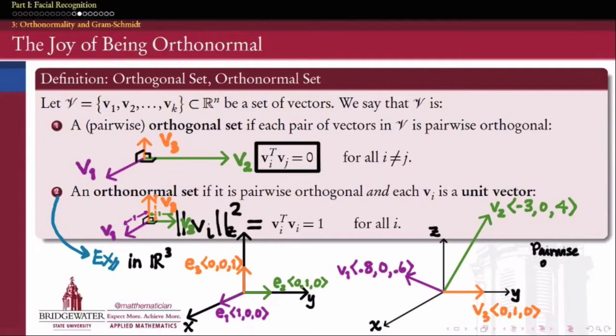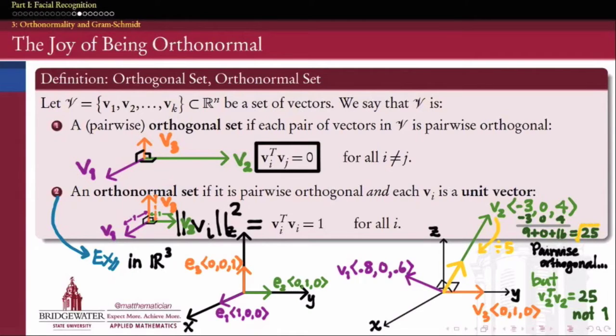We can check that this is a pairwise orthogonal set. In other words, if we take any of these vectors and dot product it with any of the other vectors, we're going to get 0. So this is a mutually perpendicular set of vectors. But it's not orthonormal. The reason it's not orthonormal is that v2, if we take its dot product with itself, does not give us 1, it gives us 25. But we can fix that in the traditional way that we do when working in vectors, by dividing that vector by the square root of its dot product with itself.